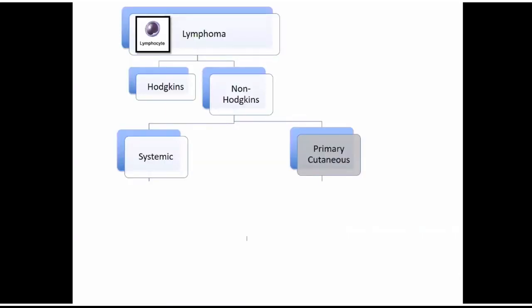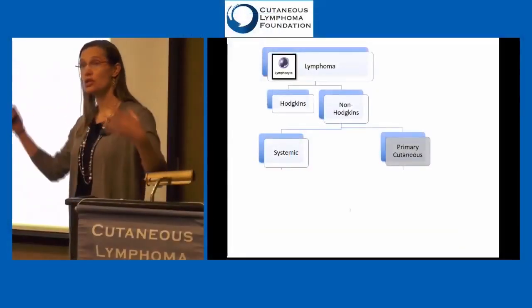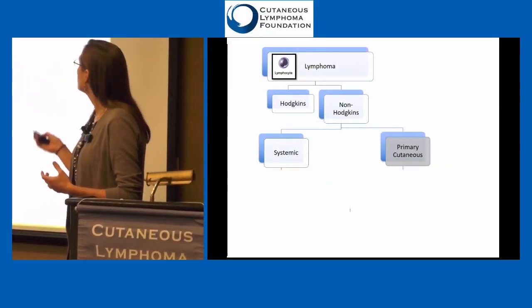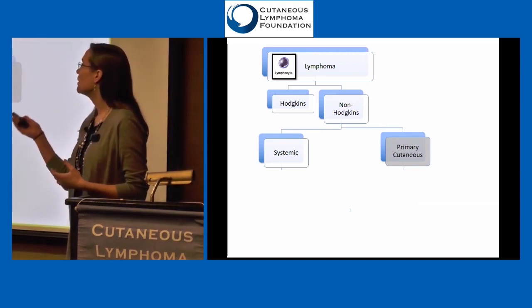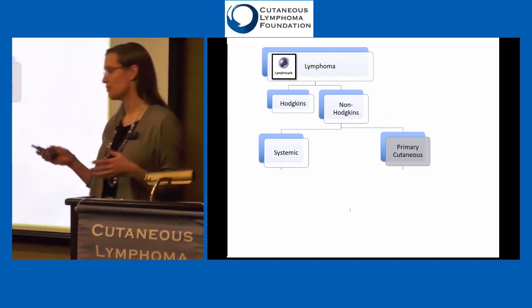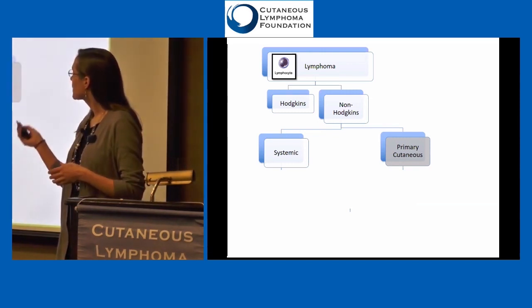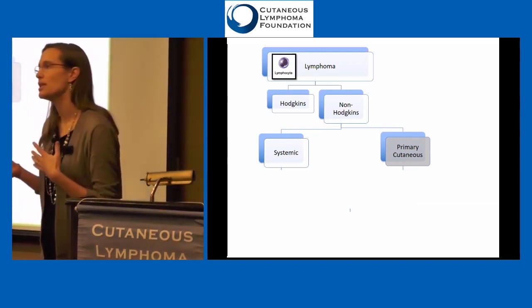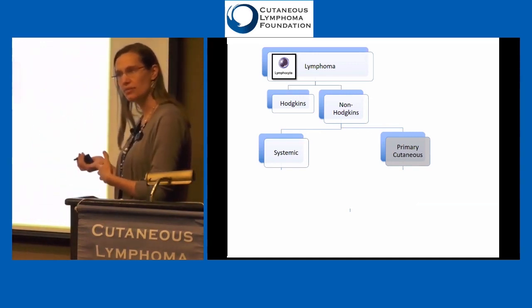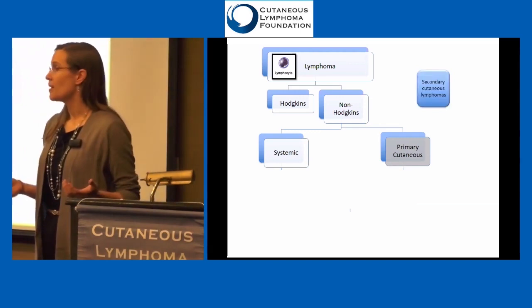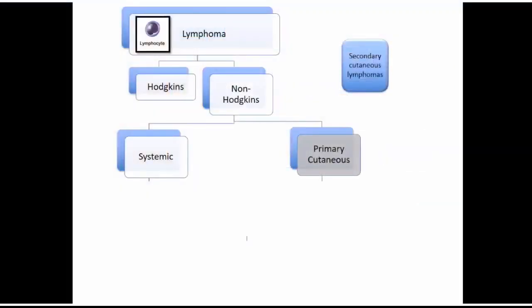When people come in and say 'I have non-Hodgkin's lymphoma,' that actually is a huge group of different diseases. The Hodgkin's versus non-Hodgkin's is really just one break point in how we think about different types of lymphoma. The more important thing, when coming into the cutaneous lymphoma clinic, is whether this is a primary skin lymphoma or a systemic lymphoma that might have spread to the skin — what we call secondary cutaneous lymphoma. Sometimes a lymphoma starts in a lymph node or spleen and then travels to the skin.